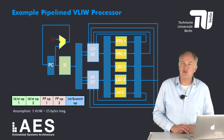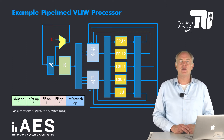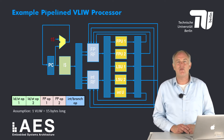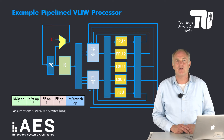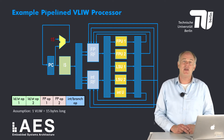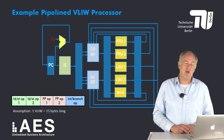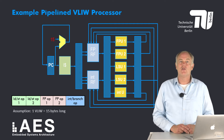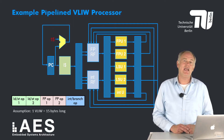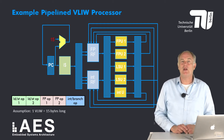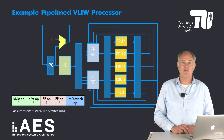After the instruction is decoded, we have a stage where the register files are read. We can see that the register files require a lot of ports to provide parallel read and parallel write access. Then we have the parallel operations, and then we write back the results.